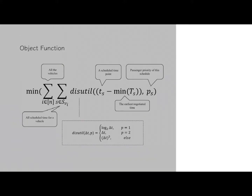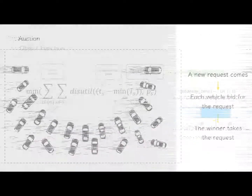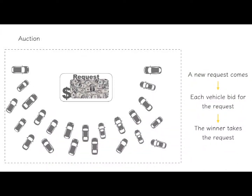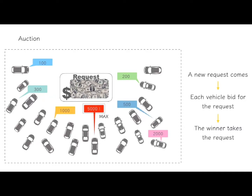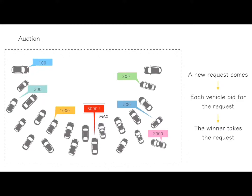What I do here is basically introducing the term random delay time for better simulation of reality. Since the actual time the car picks up passengers is not 100% accurate, we assume that the deviation appears as a uniform distribution with reasonable amplitude. Then, in the auction part, given that requests are what vehicles desire, each active vehicle should bid for it with the value of a predefined objective function. As shown here, finally, the winner gets the request, ensuring that the whole system competes in an ordered manner.